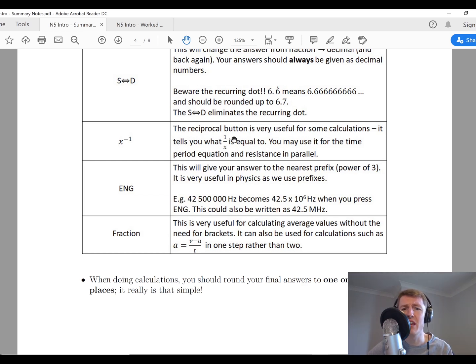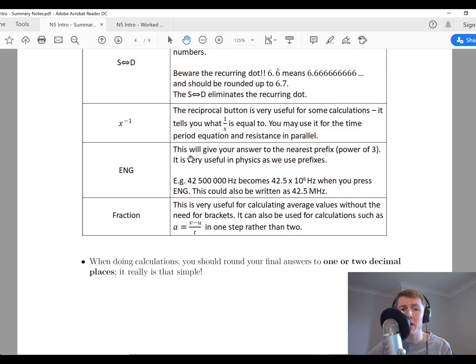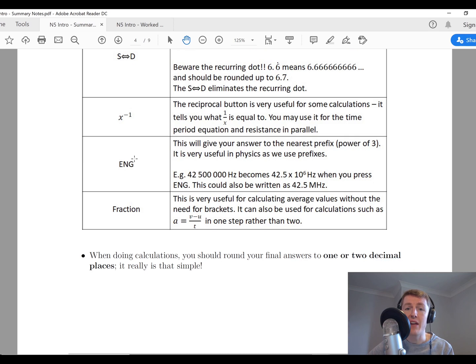This basically just lets you take one divided by the number of something, and it's a quick way of doing that. The second to last button to make you aware of is the ENG button. I think this stands for engineering. This can be useful if you want to change numbers into prefixes. Because we use prefixes and powers of three in physics, this puts things into powers of three or powers of six or powers of nine and so on for you.